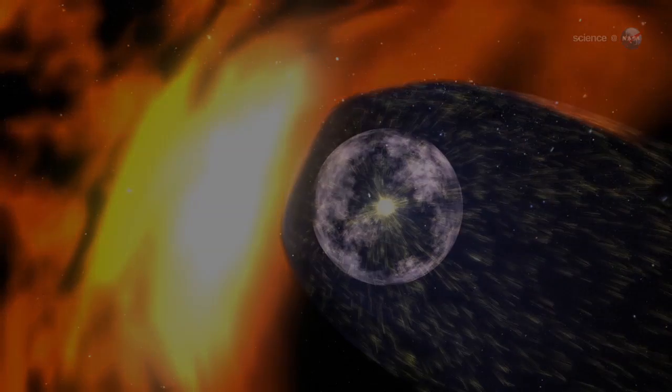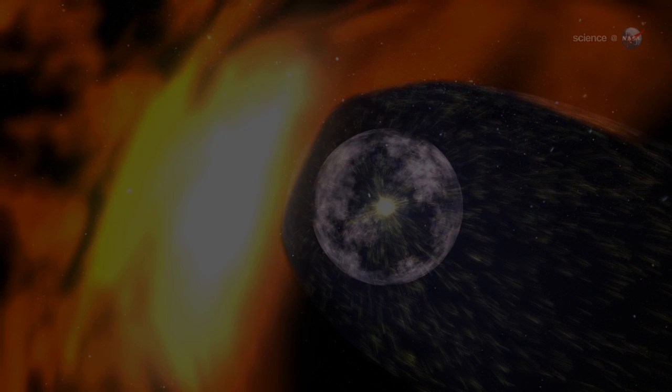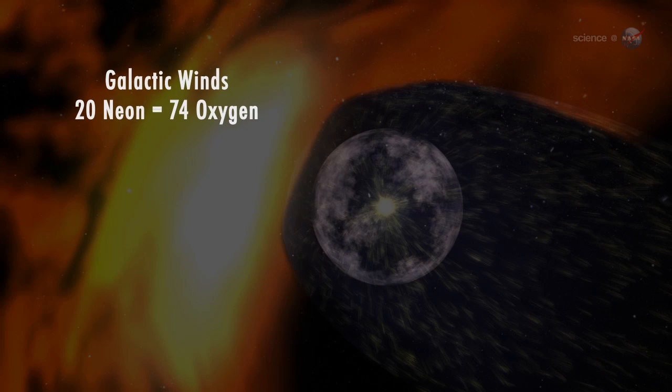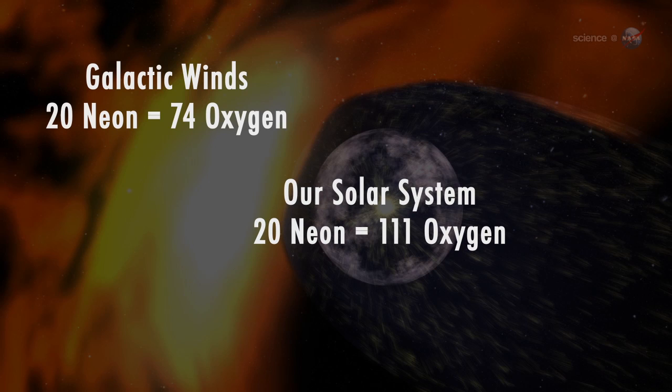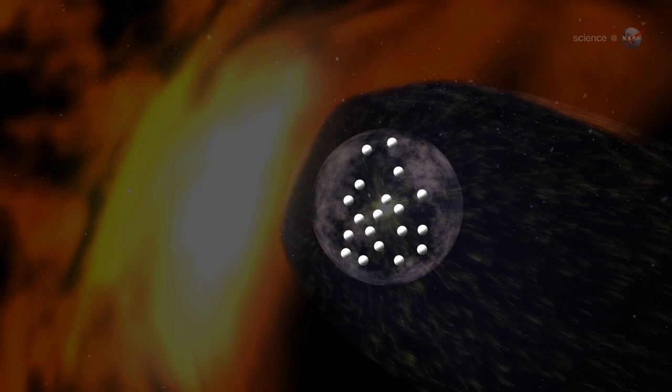the IBEX team reported that for every 20 neon atoms in the galactic wind, there are 74 oxygen atoms. In our own solar system, however, for every 20 neon atoms there are 111 oxygen atoms. That translates to more oxygen in any given slice of the solar system than in local interstellar space.